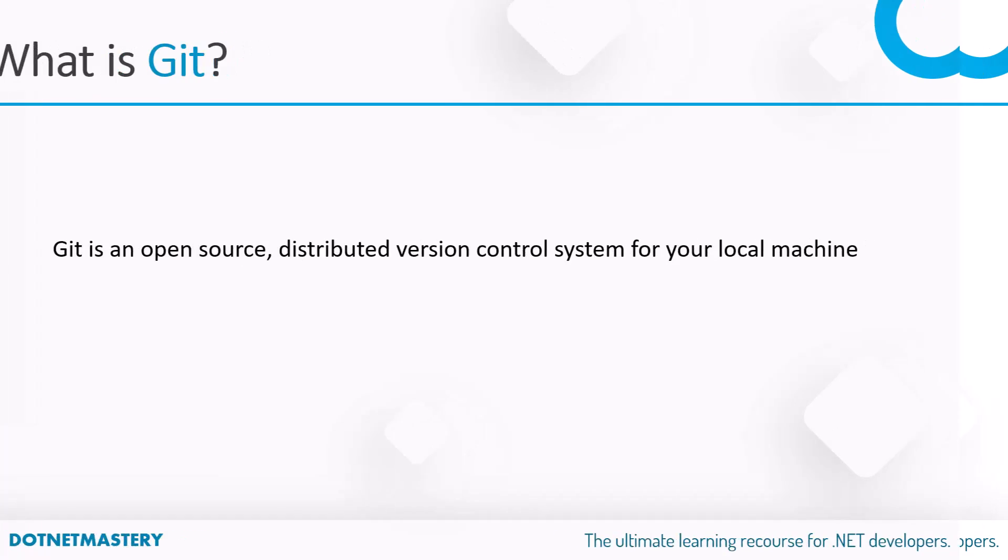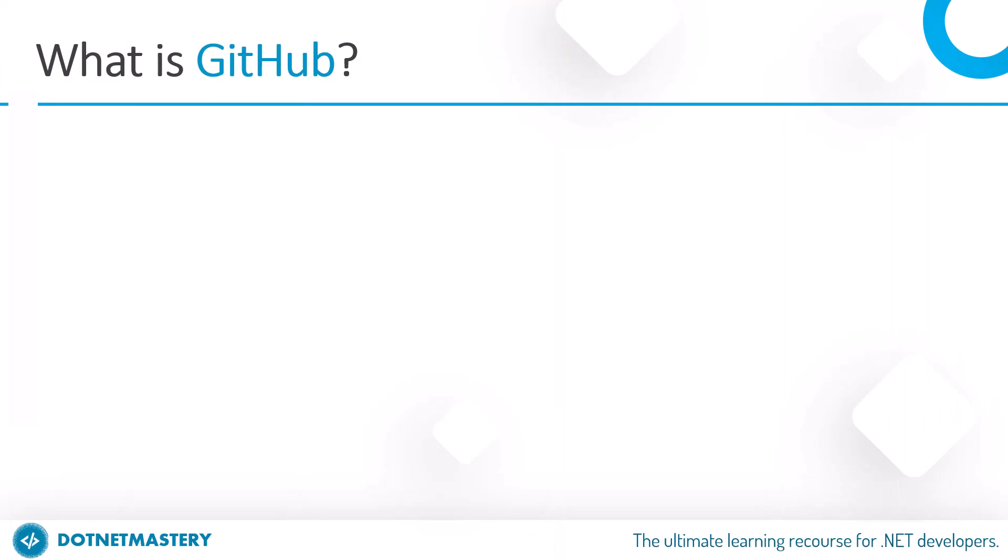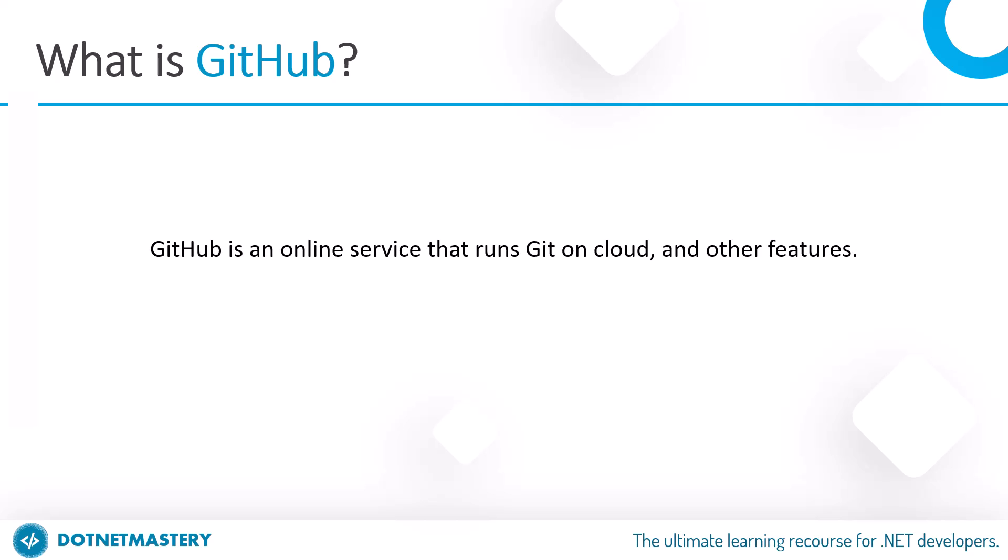That is where something like GitHub comes into picture. GitHub is an online service that runs git on the cloud. Along with that, GitHub provides services like pull requests, ticket tracking, CI/CD, and much more. There are other services like GitHub that run git on the cloud, such as Azure DevOps, but GitHub is the most common and widely used, and that is what we will cover in this course. We will focus on git using the command line and not any graphical user interface, because the command line is what will help you master the fundamentals.